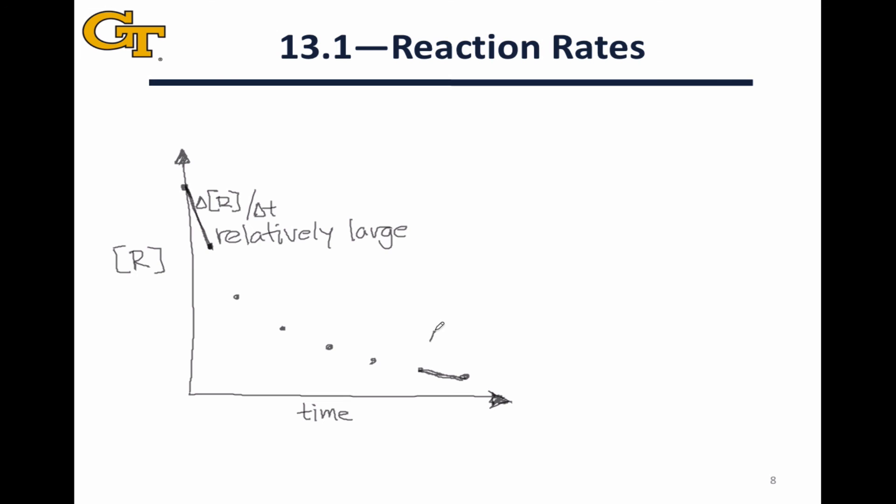If we do the same thing on the other side of the data set and look at, again, the same thing, delta R over delta t here, and I should be careful and add negative signs in front of these since we're going to want those rates to be positive, we can see that the rate here is relatively small.